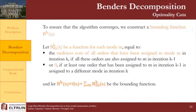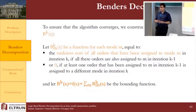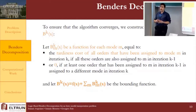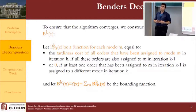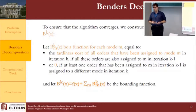To ensure the algorithm converges to the optimal solution, we construct a bounding function b. For each mode n, we define functions b(n) equal to either the tardiness cost of all orders assigned to mode n in the current iteration if all those orders were also assigned to the same mode in the previous iteration, or zero if at least one order assigned to mode n in the previous iteration is now assigned to a different mode. The global bounding function equals the sum of function f and the sum of all functions b(n).